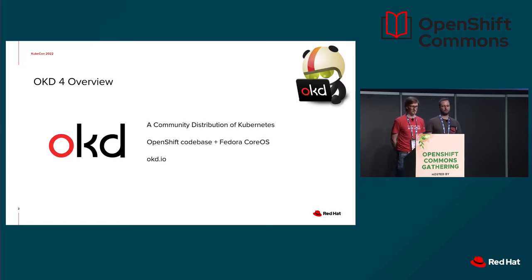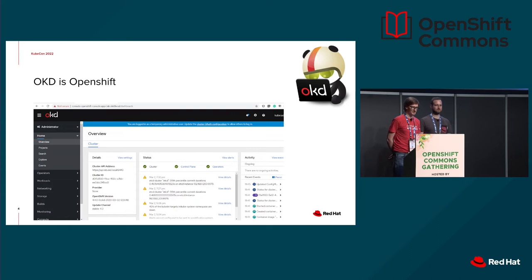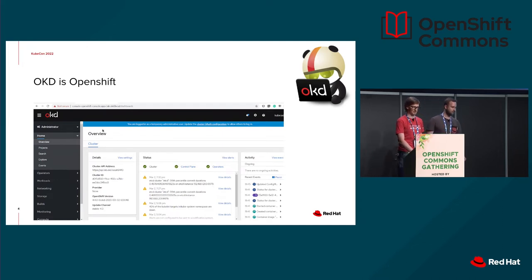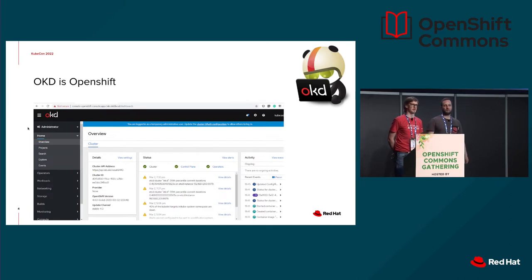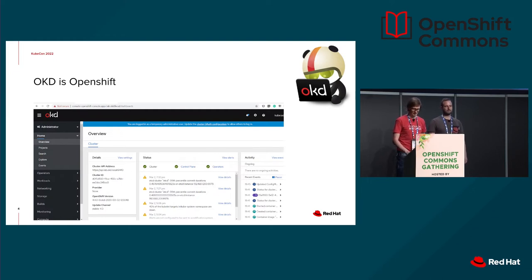You can find more information on the site OKD.io. OKD is effectively OpenShift with a slight difference of branding. Other than that, the goal is to provide all the features that OCP has, with an option for the community to participate and make decisions on where the distribution is going.